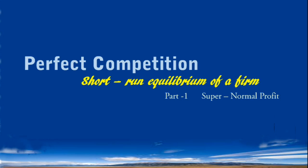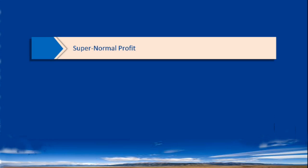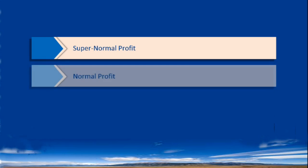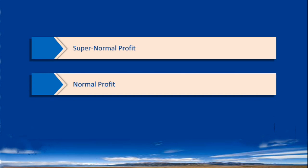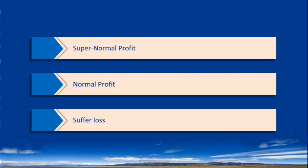Under Perfect Competition, a firm shall be in equilibrium, and at the same time it may earn Super Normal Profit, or Normal Profit, or Suffer Loss. There are three possibilities for a firm.